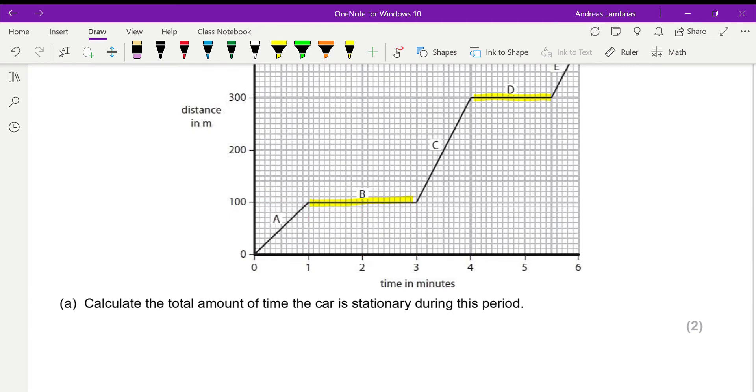We need to find the total amount of time during these two stationary periods. For the first one it's from one minute to three minutes, therefore this is two minutes. The next one is four to five point five, so this is one point five minutes.